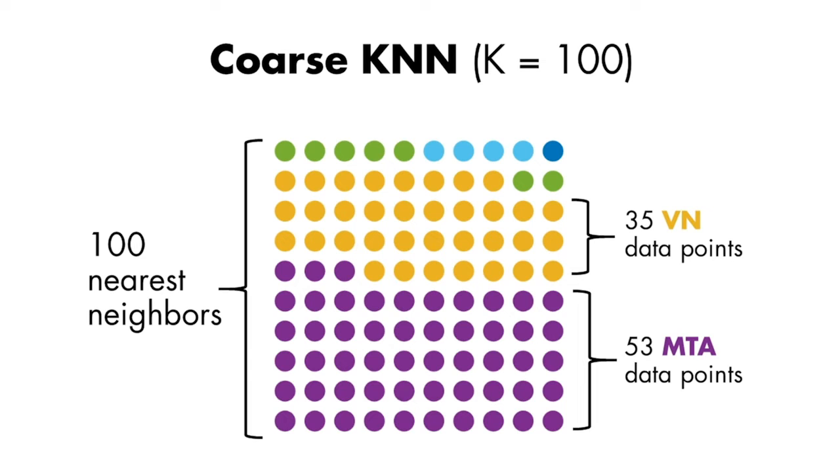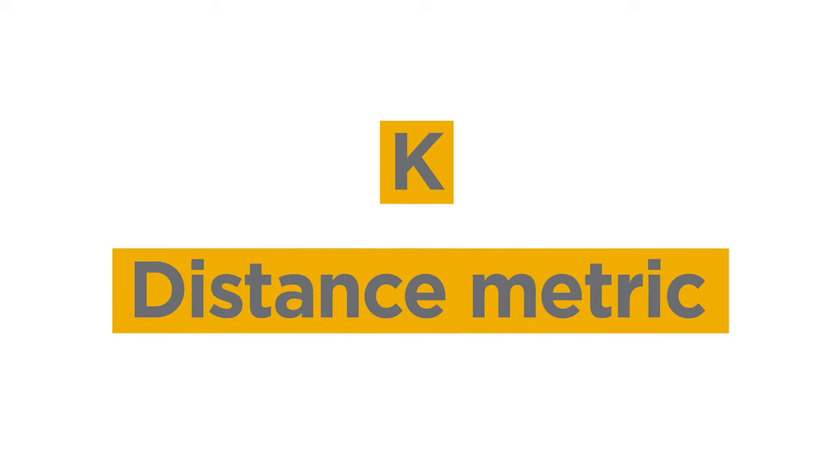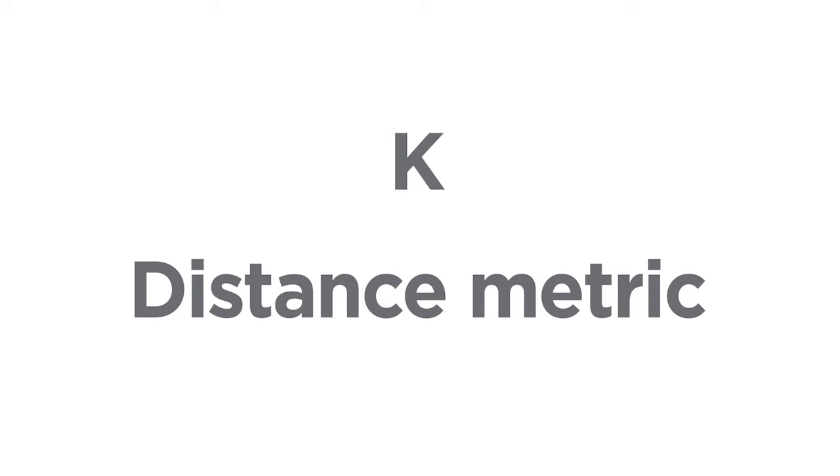Now you have two hyperparameters, K and distance metric. So is there a better way for finding the optimal hyperparameter values?